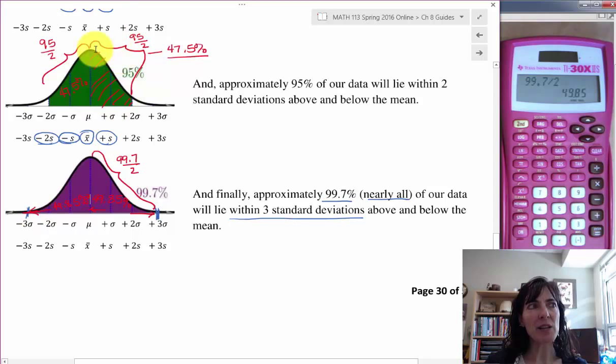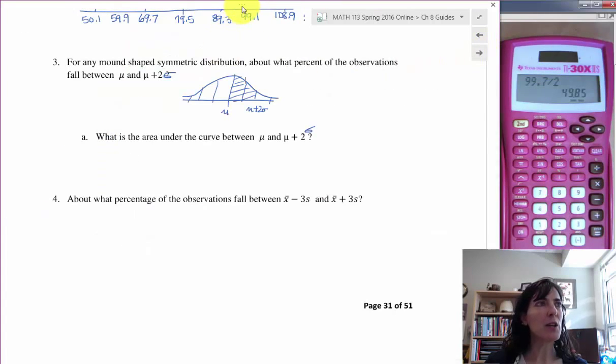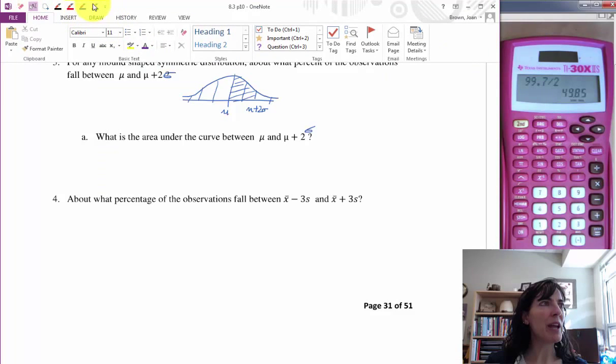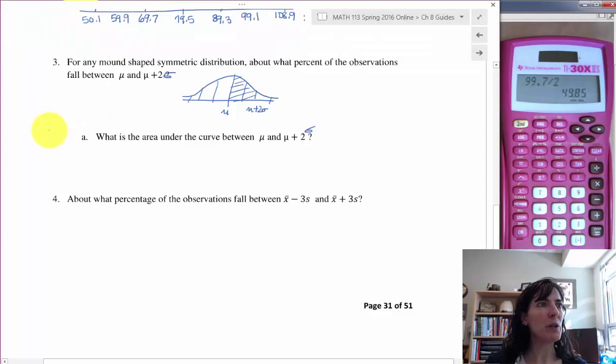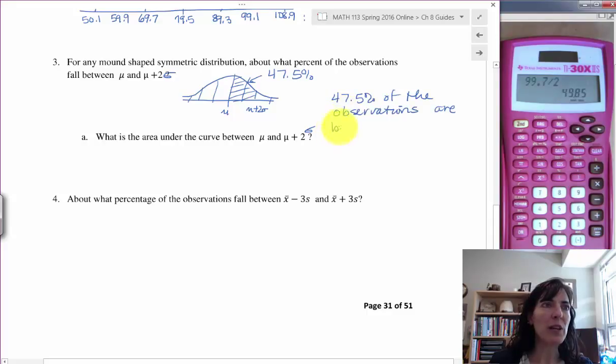So what we were being asked about was this half, which is 47.5%. So let's come back to this page. So this region, 47.5%. So our answer is going to be 47.5% of the observations are between mu and mu plus 2 sigma. That's how you analyze the mound shape based on the empirical rule.